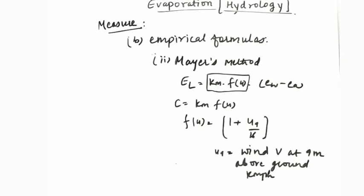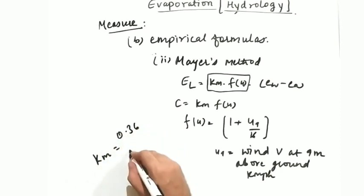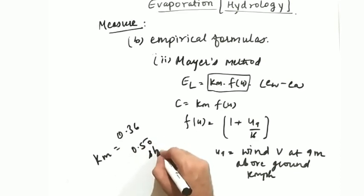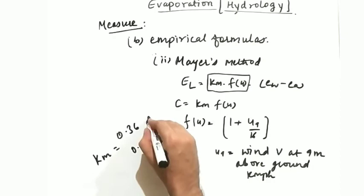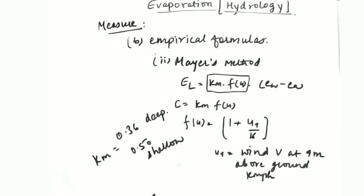What is Km? Km is the Mayer's coefficient and it depends upon the depth. If the lake is a deep lake, then the Km is 0.36. And if the lake is a shallow lake, then Km is 0.50. You must remember the value of Km for deep and shallow lakes since it may or may not be given in the question. So you must remember this.